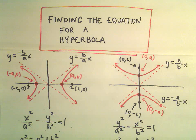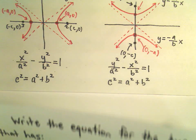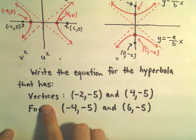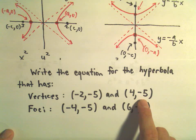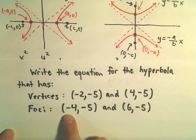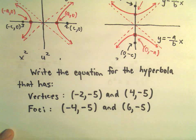All right, so one more example here of finding the equation for a hyperbola. In this case, we're going to find the equation for the hyperbola that has vertices at (-2, -5) and (4, -5), and the foci are going to be at (-4, -5) and (6, -5).